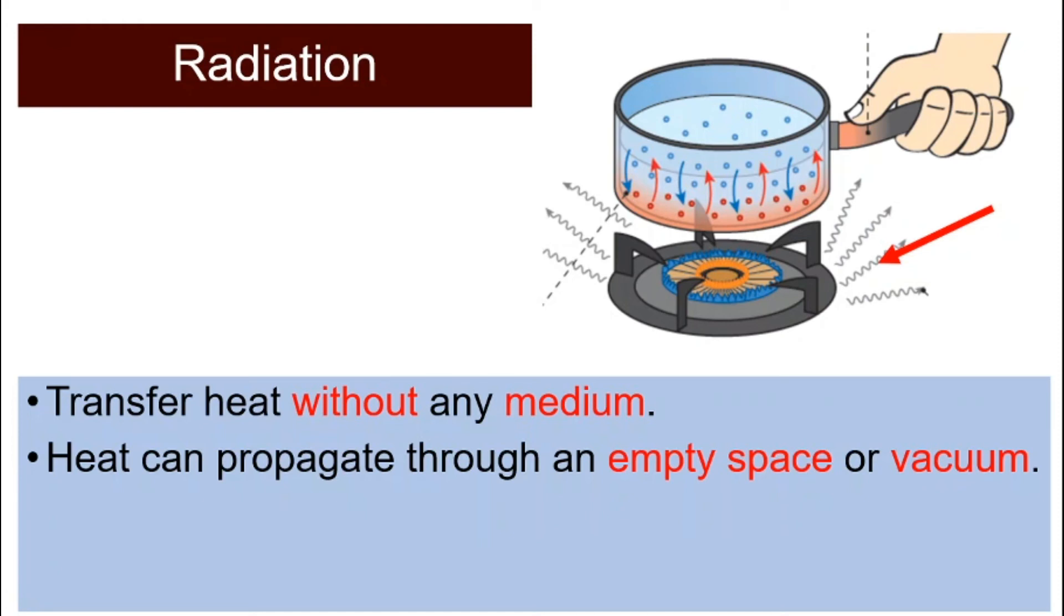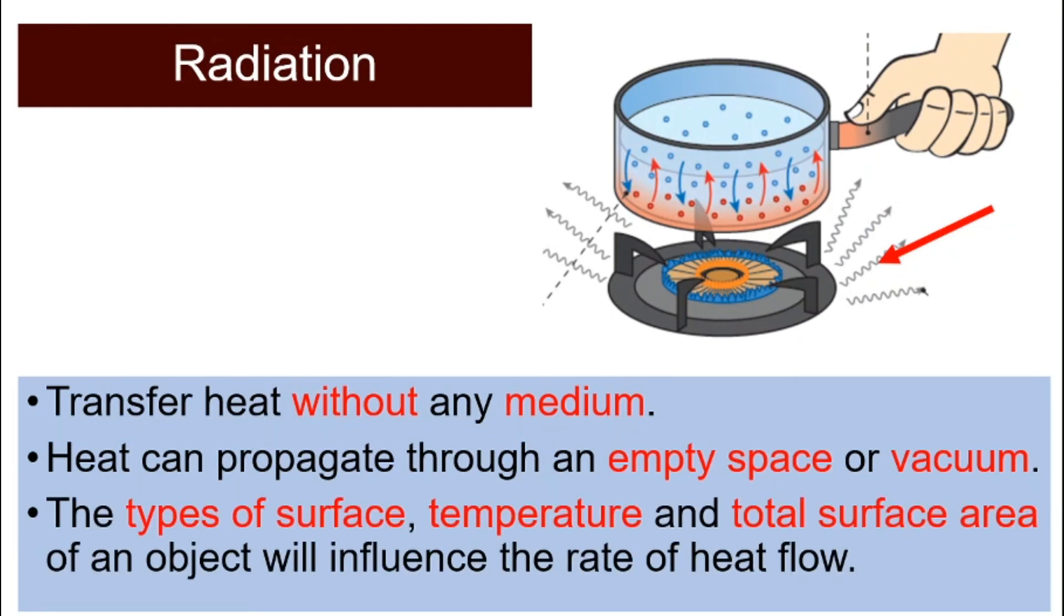It can propagate through an empty space or vacuum. It doesn't need anything. If it is empty space, there's no gas, no solid and no liquid. Radiation can still happen. The types of surface, temperature, and total surface area of an object will influence the rate of heat flow. So remember, radiation does not need any form of medium.